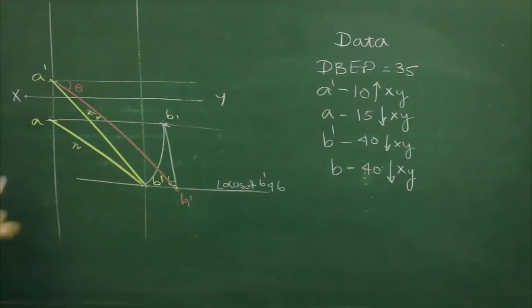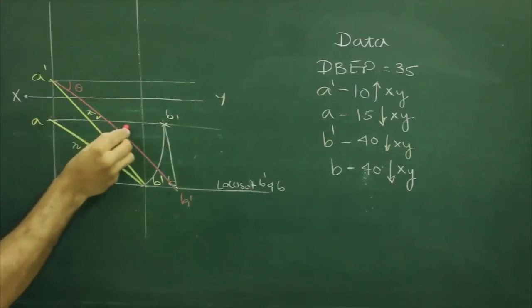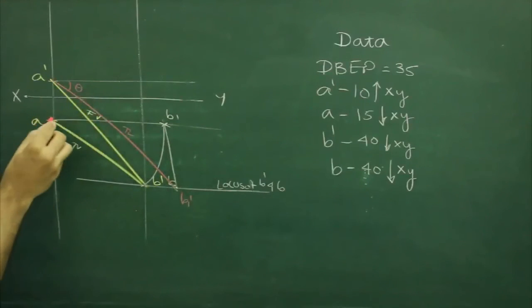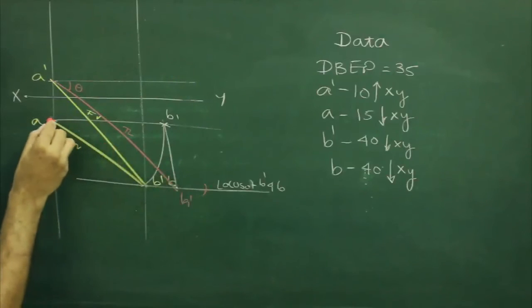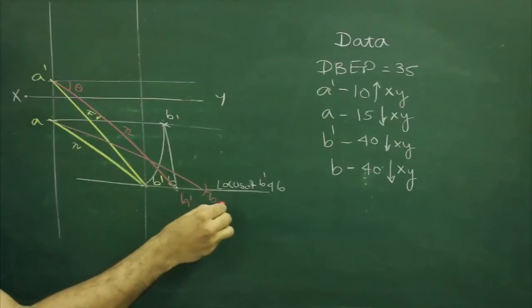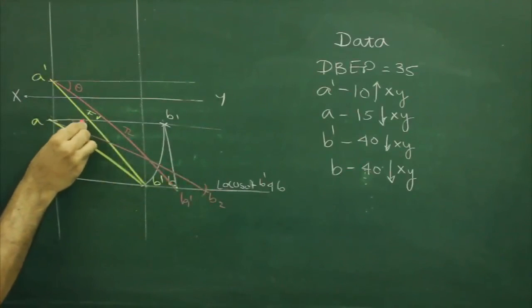Then we can take the same true length with your compass and from A, we can cut on this angle. That will be b2. And this angle will be phi.